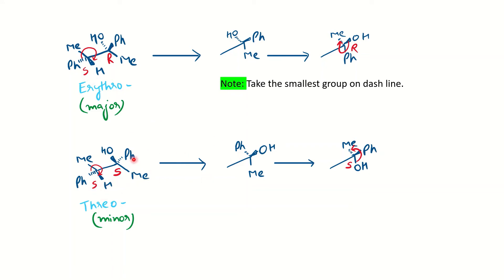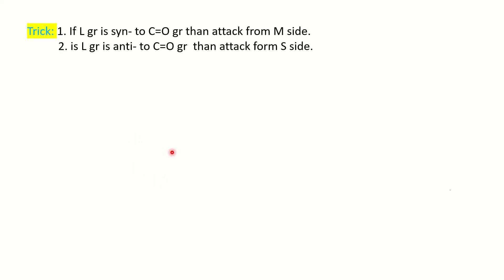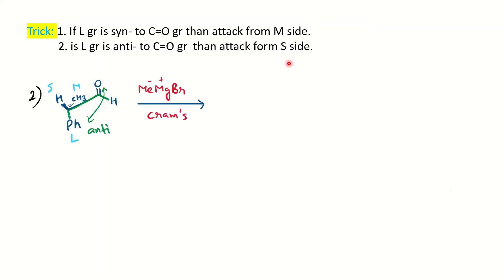This is important when questions give you RS nomenclature and ask you to find the major product. Now, using some tricks we can solve the problem in one step. The trick is: if your large group is syn to the carbonyl group, then the attack will occur from the medium side group. If your large group is anti to the carbonyl group, then the attack will come from the small side group.